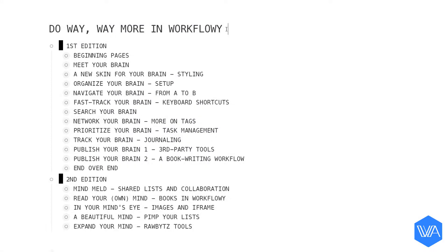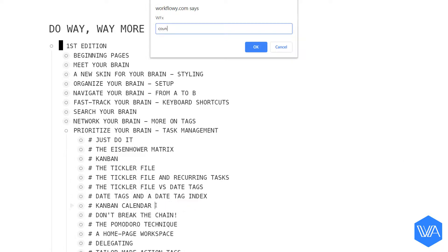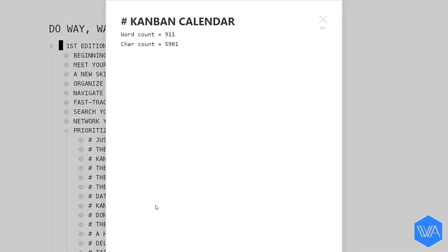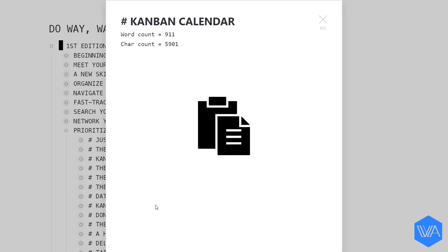The point being that with the word count tool, you determine at what level you want to count words. If I want to get a word count for a specific chapter, I can drill down deeper. If I place my cursor in the chapter on my Kanban calendar system, in a heartbeat I discover there are over 900 words in this chapter.